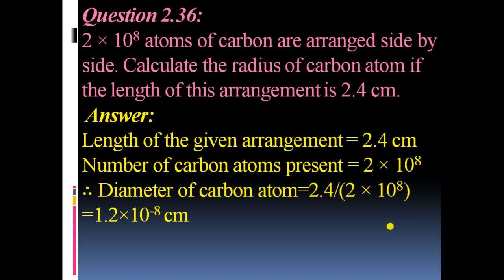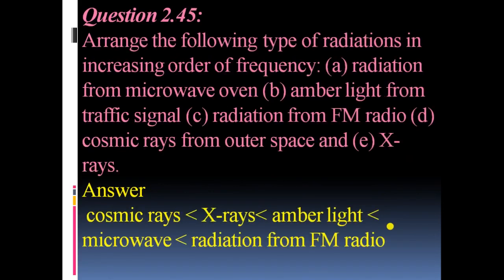Next question: 2 × 10⁸ atoms of carbon are arranged side by side. Calculate the radius of a carbon atom if the length of this arrangement is 2.4 cm. Diameter = 2.4 cm / (2 × 10⁸) = 1.2 × 10⁻⁸ cm. Question 45: Arrange the following types of radiations in increasing order of frequency: cosmic rays, X-rays, amber light, microwave, and radiation from FM radio — FM radio has the maximum frequency.